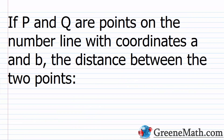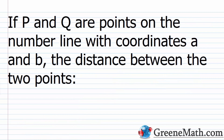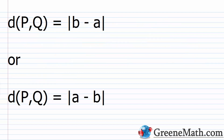Officially, as you'll see in your textbook: if P and Q are points on the number line with coordinates A and B, then the distance between P and Q is equal to the absolute value of B minus A, or equivalently the absolute value of A minus B. We can change the order and get the same result because of the absolute value operation.